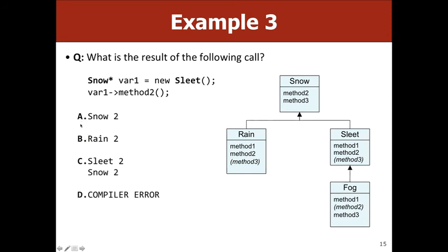What if we have Sleet* pointing to new Sleet and call method2? Snow has method2, so we proceed — we go down to sleet's method2. The first thing it does is print 'sleet 2', and the next thing it does is call snow::method2. So now we go up to snow's method2, which prints 'snow 2'. Output: 'sleet 2' then 'snow 2'.